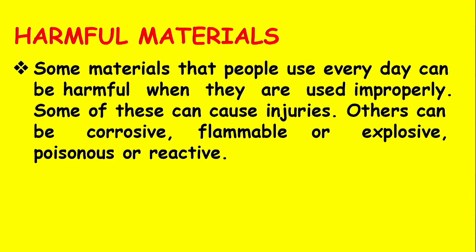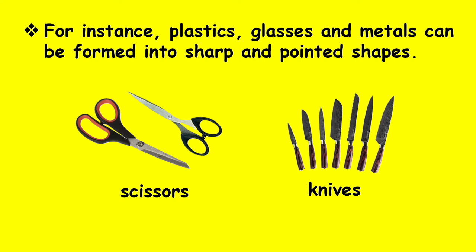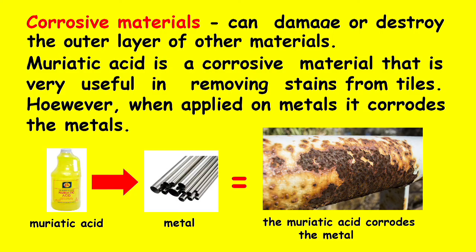Some materials that people use every day can be harmful when they are used improperly. Some of these can cause injuries. Others can be corrosive, flammable or explosive, poisonous, or reactive. For instance, plastics, glass, and metals can be formed into sharp and pointed shapes. Examples of these are pairs of scissors, knives, and similar tools. Corrosive materials can damage or destroy the outer layer of other materials. Muriatic acid is a corrosive material that is very useful in removing stains from tiles; however, when applied to metals, it corrodes the metals.